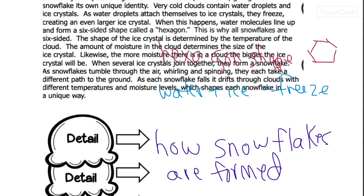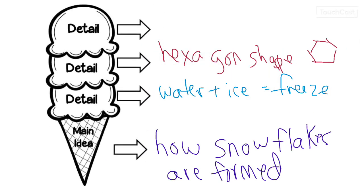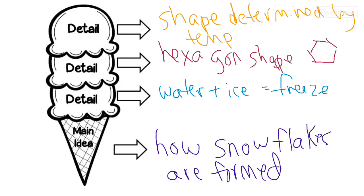The shape of the ice crystal is determined by the temperature of the cloud. Shape determined by temperature of cloud. They're going to fall through the sky and the different clouds have different temperatures and they shape them. So all of my details go back to how they're formed: water and ice freeze, they become hexagon shaped, and the shape is determined by the cloud.